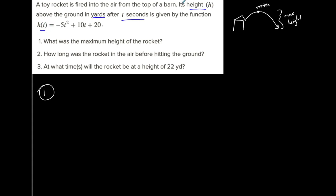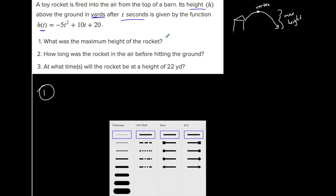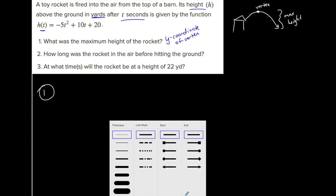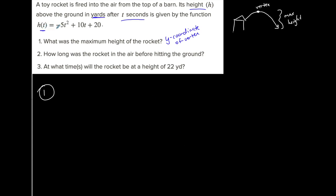We want to find the y-coordinate of the vertex, which is basically H of t in this example. In order to find the y-coordinate of the vertex when I have a quadratic in standard form like this, I need to first find the x-coordinate of the vertex because it's not in vertex form. There's a little formula — negative b over 2a — that we use to find the x-coordinate of a vertex when we have a quadratic in standard form.